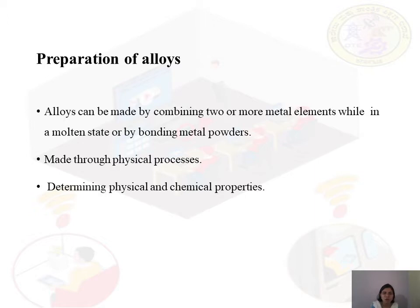The product obtained after cooling from the moulds is known as an alloy. The metal present in the largest composition in the alloy is known as the base metal, and all other metals are known as alloying elements.